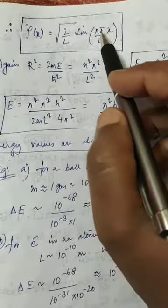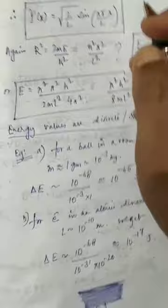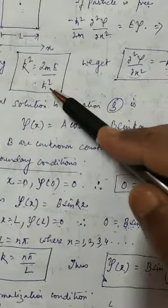So what is ψ(x)? The final solution is ψ(x) = √(2/L) sin(nπx/L). Now for some interesting consequences: if you remember, we defined k² = 2mE/ℏ².